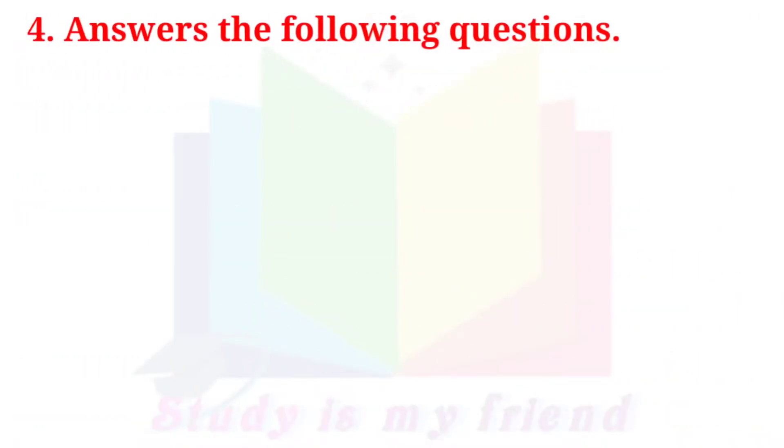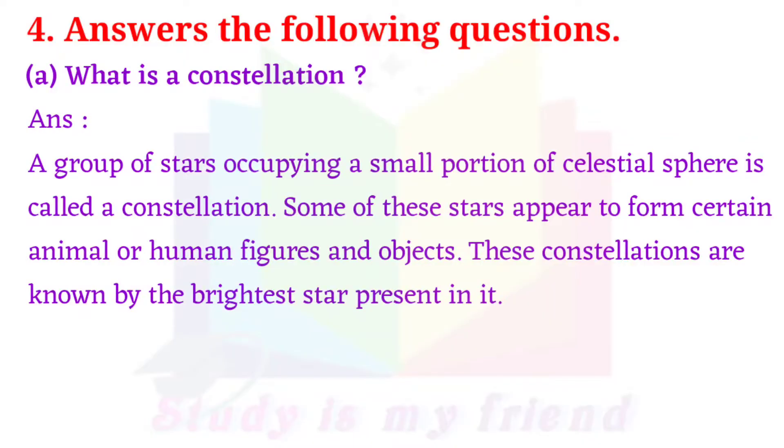4. Answer the following questions. a. What is a constellation? A group of stars occupying a small portion of celestial sphere is called a constellation. Some of these stars appear to form certain animal or human figures and objects. These constellations are known by the brightest star present in it.